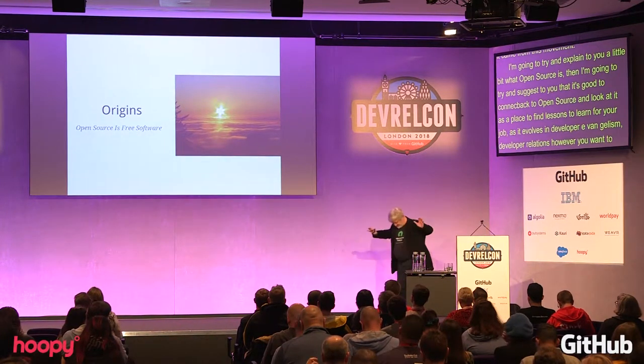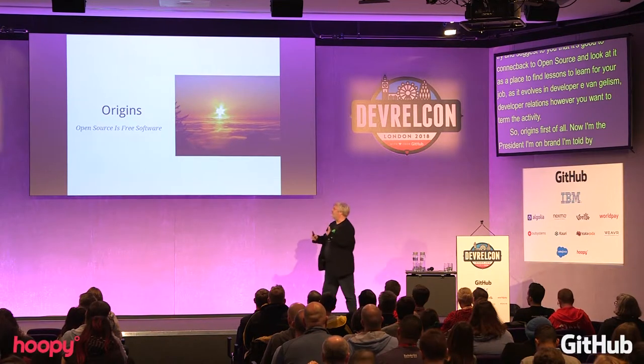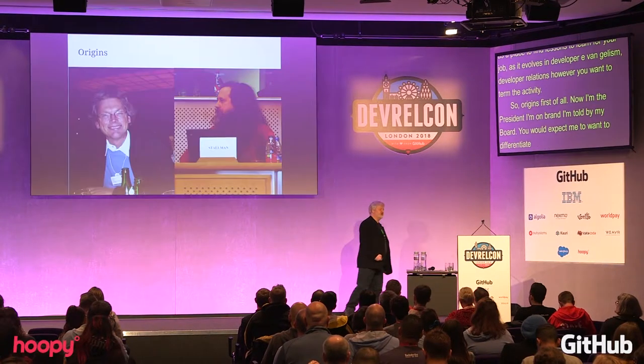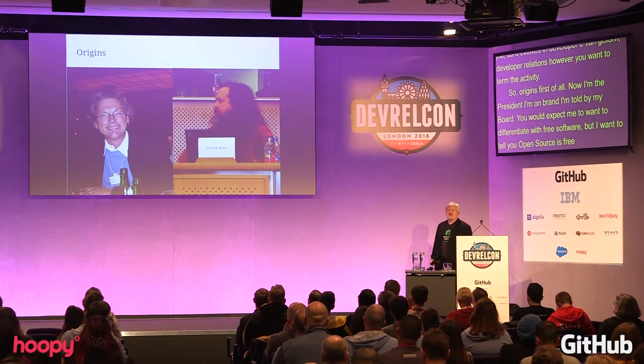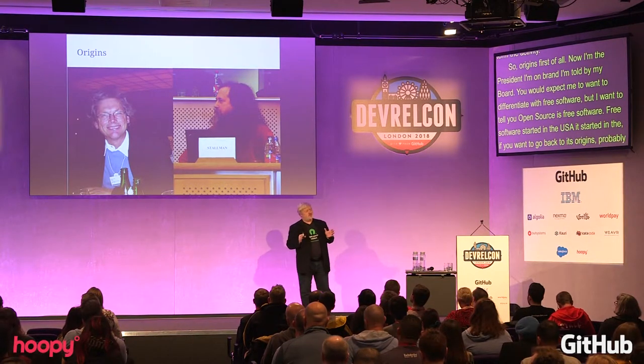As president of OSI I'm on brand, but I want to tell you that open source is free software. Free software started in the USA, probably around 1977. That was the time when Bill Joy started working on a set of tools that went with AT&T Unix, which he developed into a suite distributed by the University of California at Berkeley, known as the Berkeley Systems Distribution, or BSD.